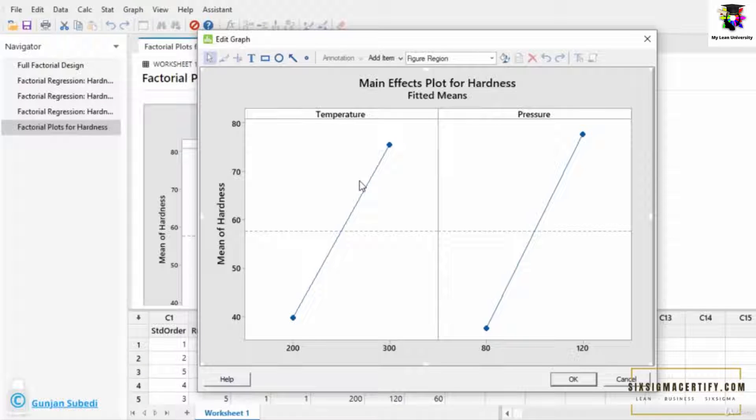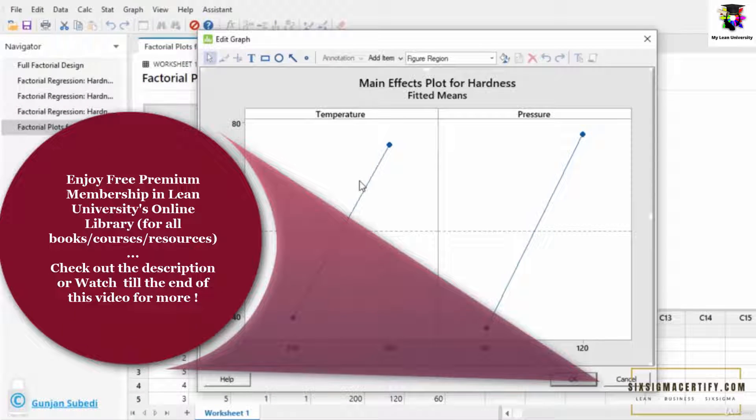Another thing to understand in main effect plot is your main effect plot must be inclined to some angle in order to be sure that the factors have an effect on the response.